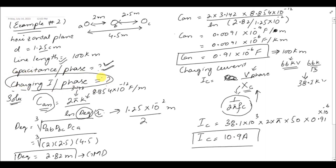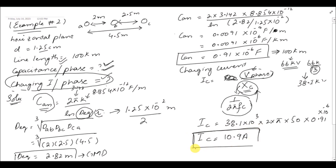An important reminder: the voltage in the numerator must be the phase voltage. The voltage given in the question is usually line-to-line voltage unless stated otherwise. You must convert it to phase voltage by dividing by √3, then calculate the reactance to get the charging current value of 10.9 ampere.